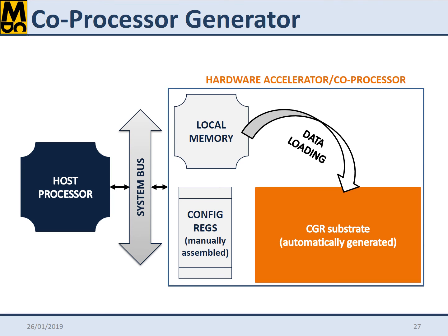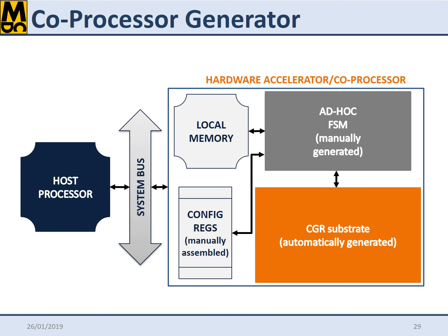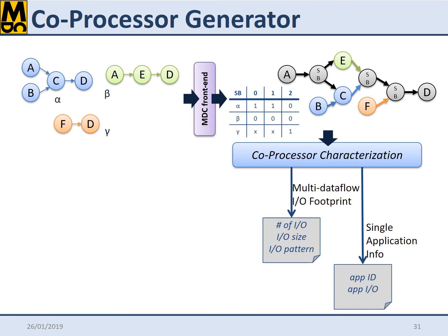Data loading and data storing are both application-specific. Therefore, an ad-hoc finite-state machine has to be designed to delegate a given set of functionalities to the accelerator. This may turn out to be time-consuming and error-prone when you would like to change the reference set of input specifications or simply add a new one. The MDC coprocessor generator analyzes the multi-dataflow specification generated by the MDC baseline core and retrieves its I/O footprint, which includes the I/O port number, their size and their token patterns, and some application-related information, such as the IDs of the specifications that will be delegated to the accelerator and the I/O ports they will use.